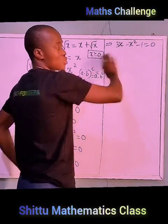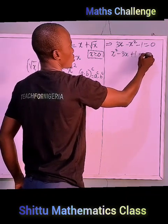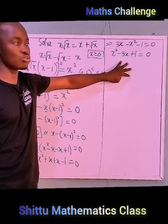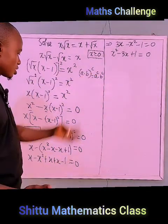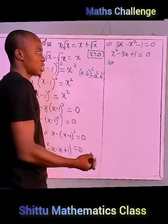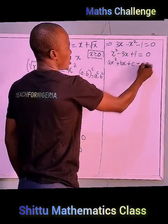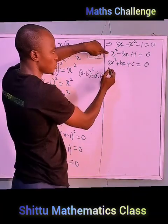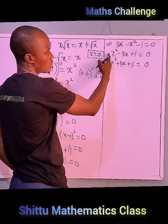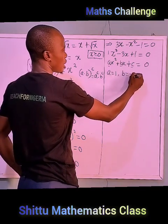Rearranging by sending all terms to the other side gives x² minus 3x plus 1 equals zero. We have now arrived at a quadratic equation in terms of x. We will use the quadratic formula to solve it. Comparing with the general quadratic equation ax² + bx + c = 0, we get a = 1, b = minus 3, and c = 1.